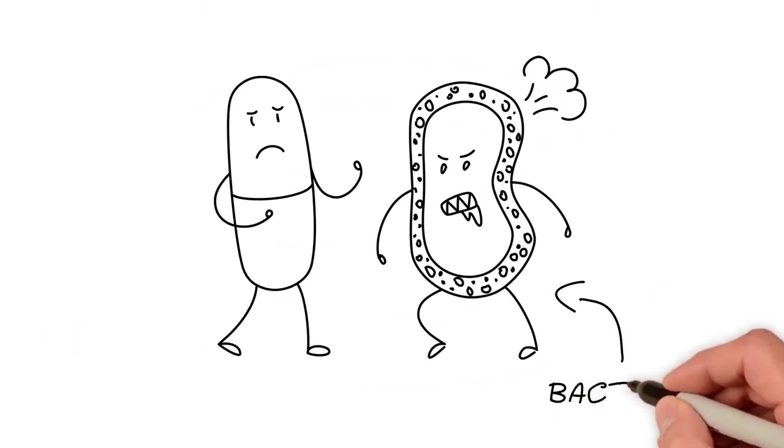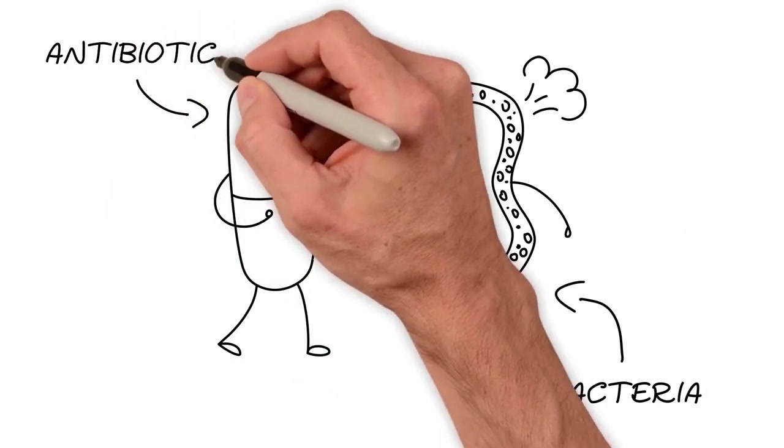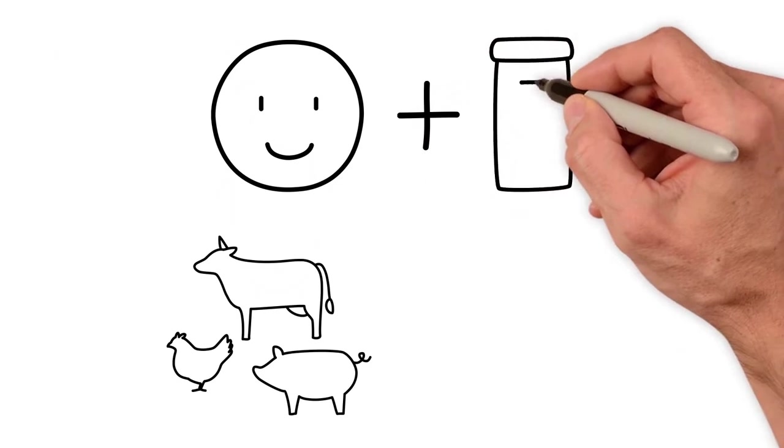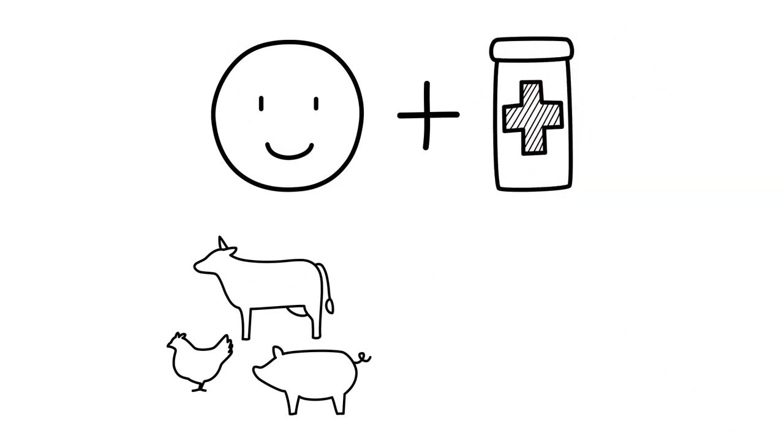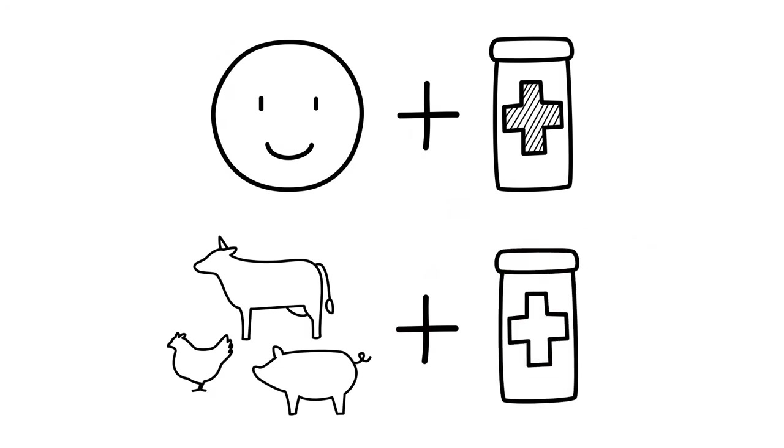Resistance is when bacteria stop responding or don't respond as well to antibiotics. It's a phenomenon that predates man-made antibiotics. However, any antibiotic use in humans or animals can lead to resistance.